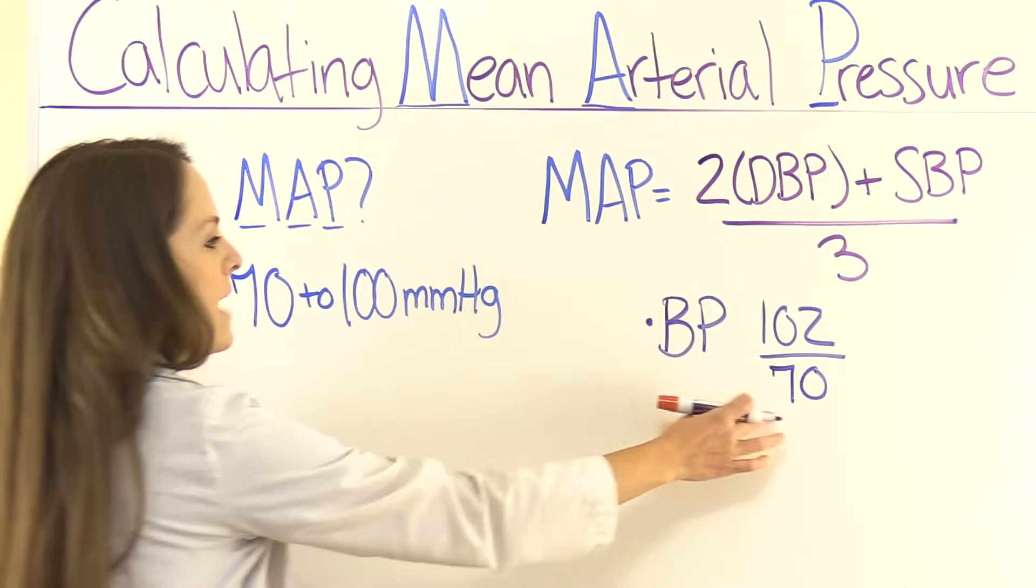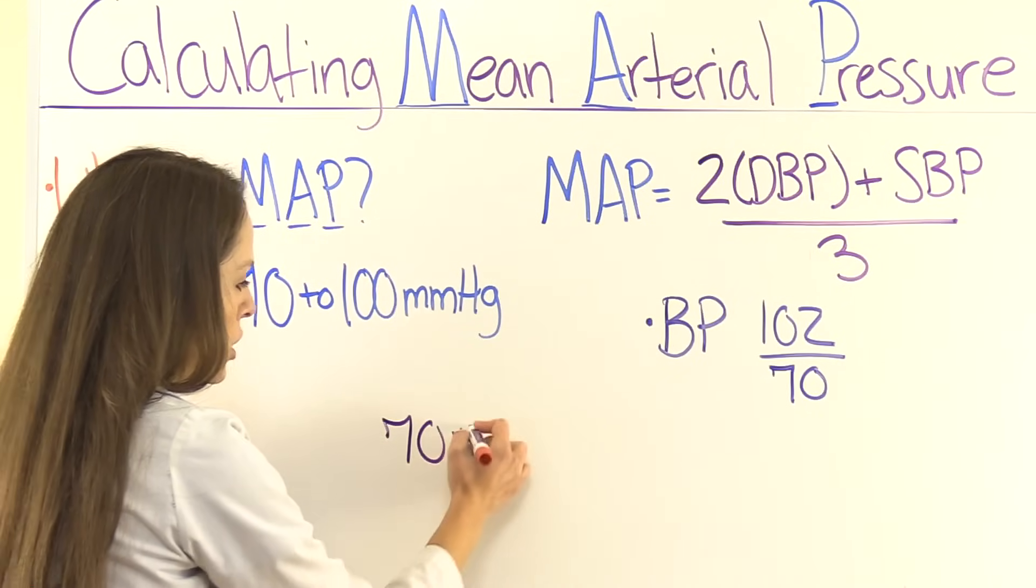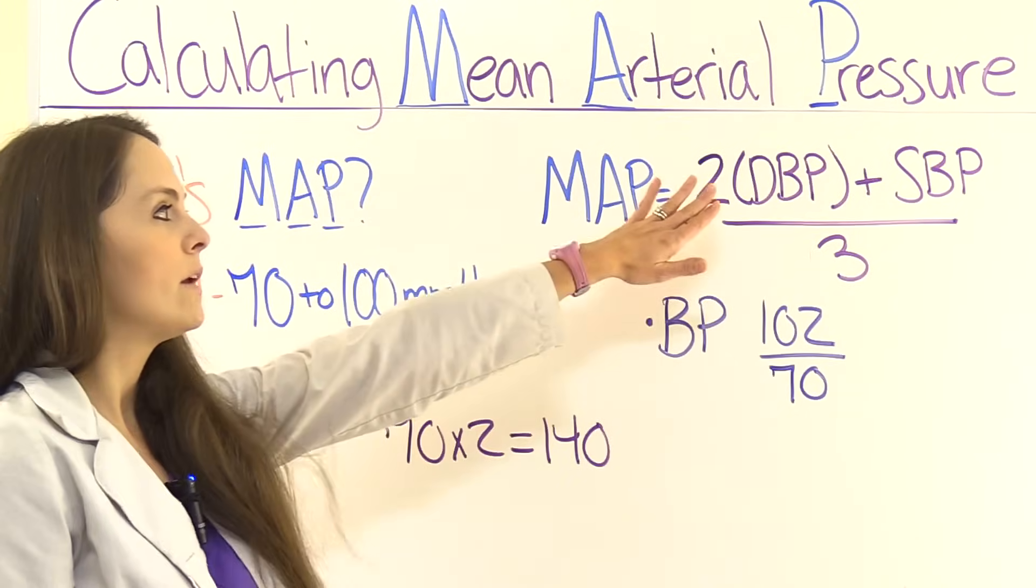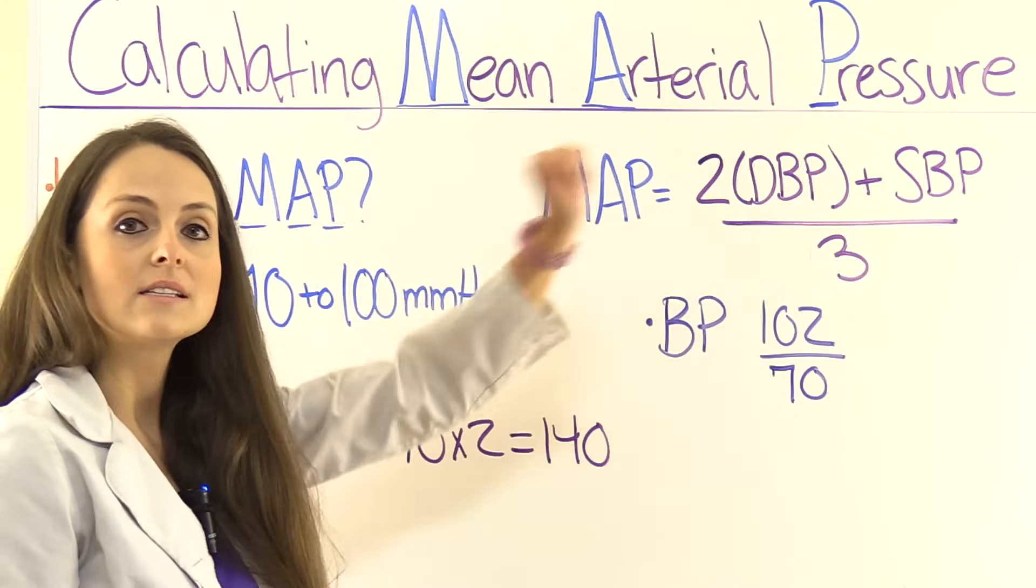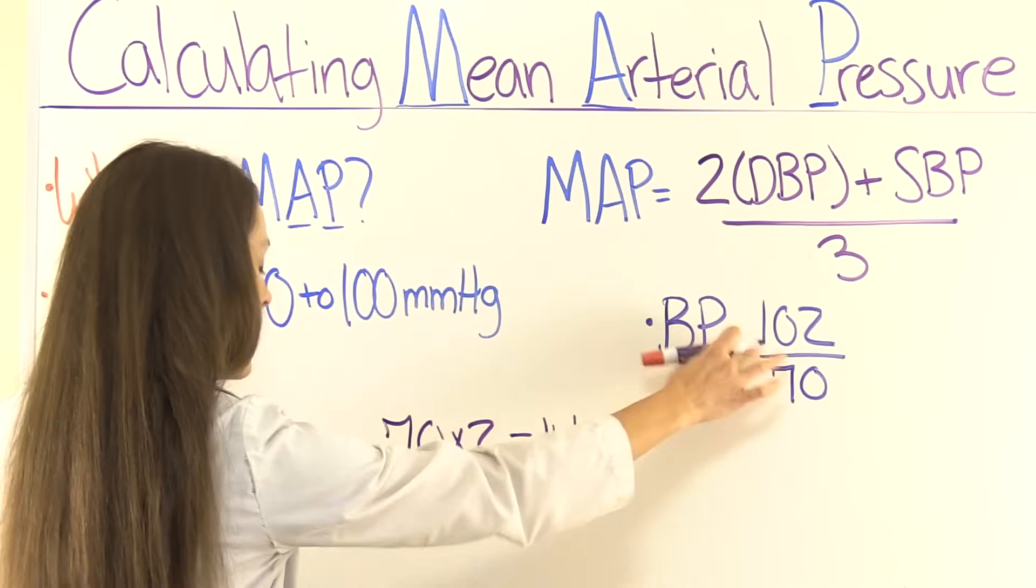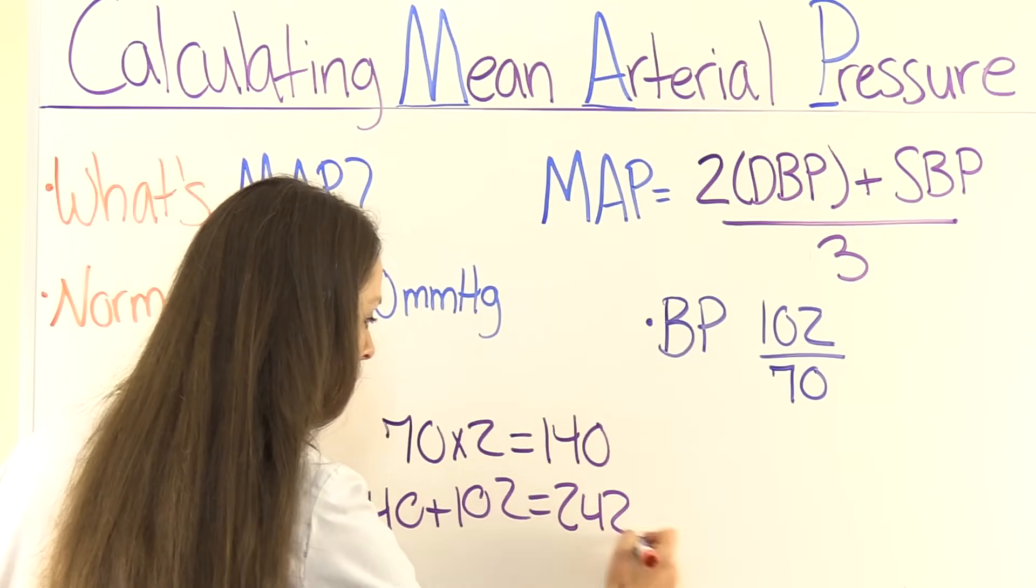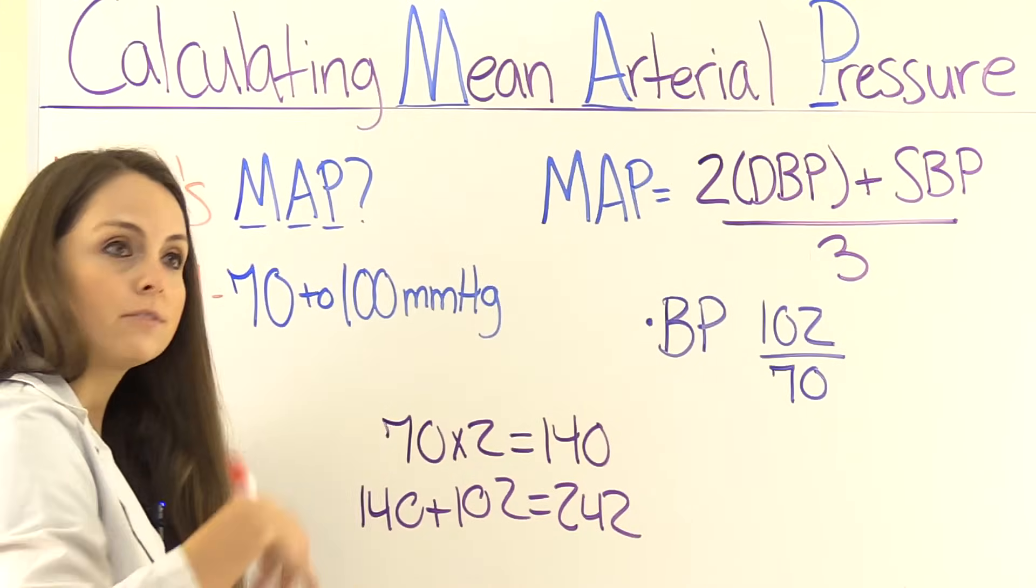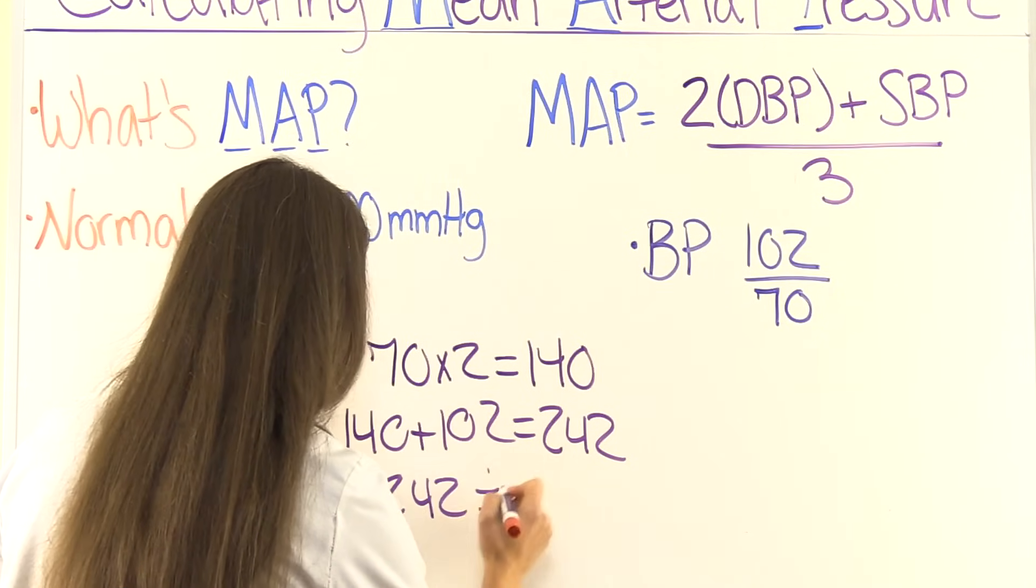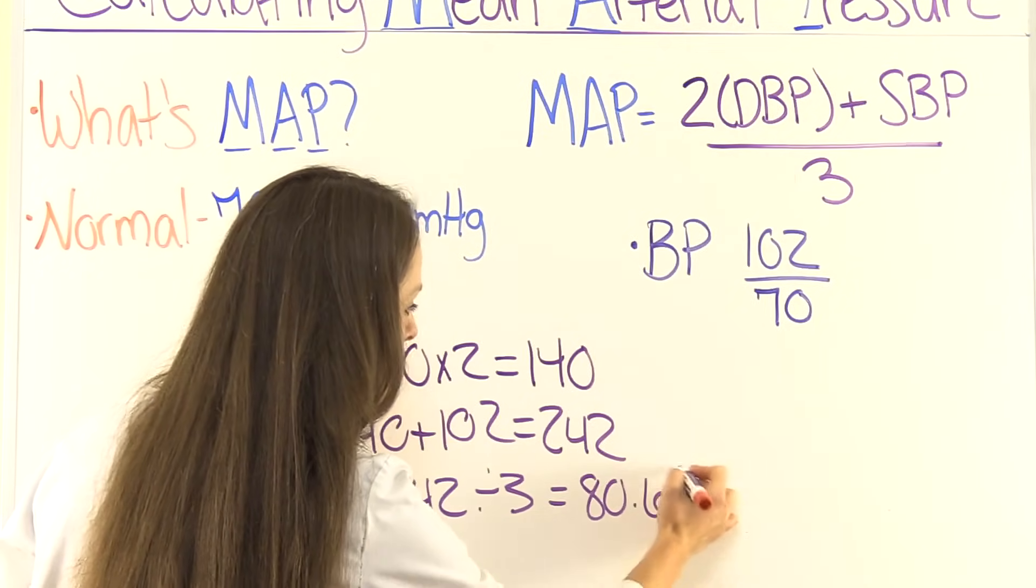So our diastolic is 70. So 70 times 2 equals 140. And then we're going to take 140 and add that to the systolic blood pressure. So 140 plus 102 equals 242. Then we're going to take 242, divide it by 3. So 242 divided by 3 equals 80.6 repeating.